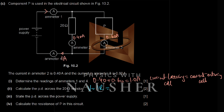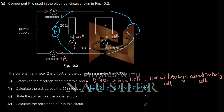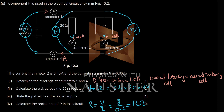Using V = IR: current is 0.4 A, resistance is 20 Ω, so voltage equals 8 volts. Since the components are in parallel, the voltage across P is also 8 volts. With the current through P being 0.6 A, resistance of P = V/I = 8/0.6 = 30 Ω. A voltmeter connected in parallel would also read 8 volts.